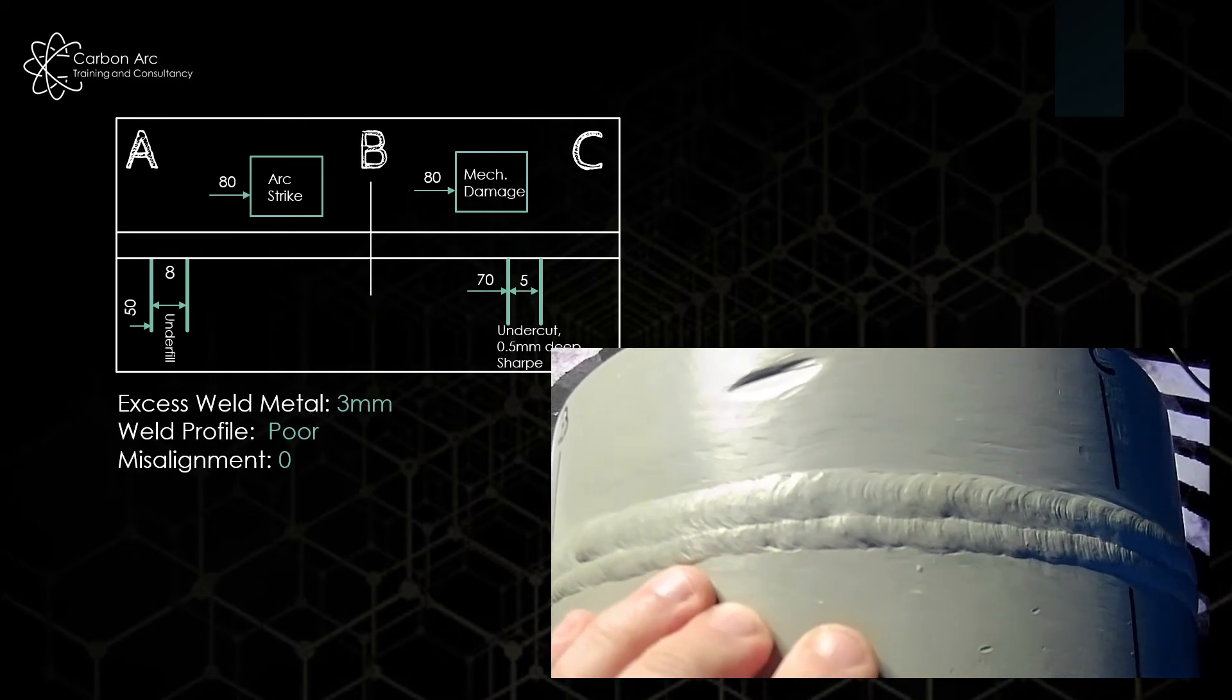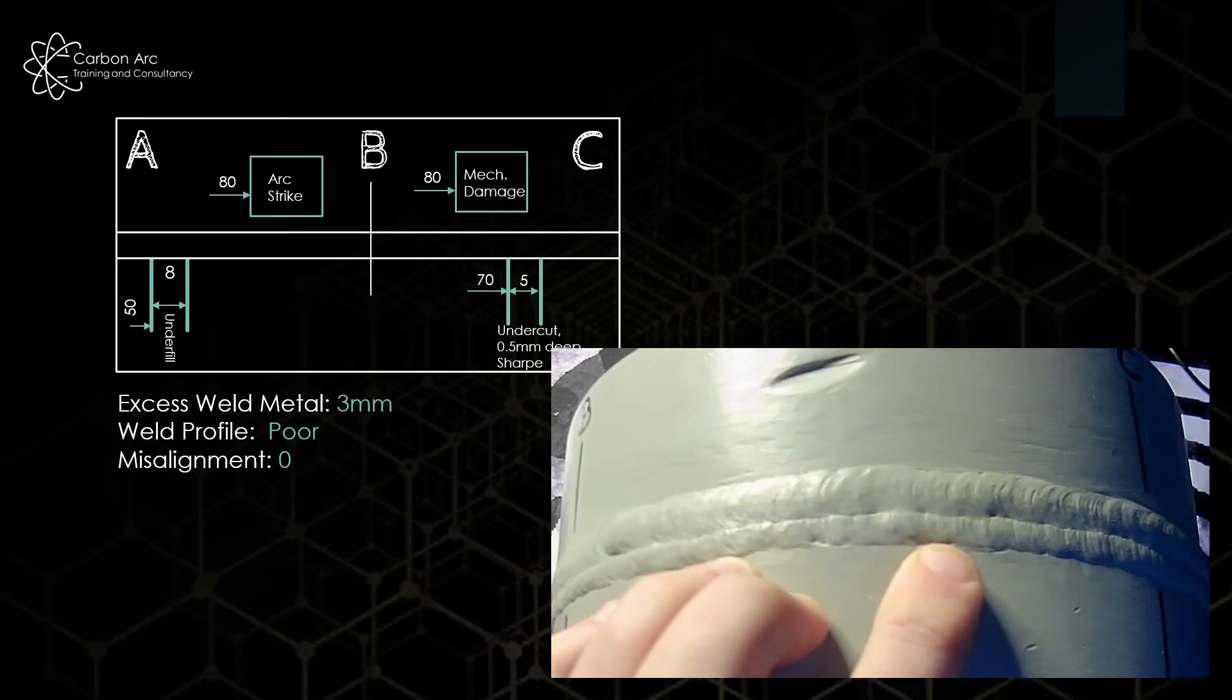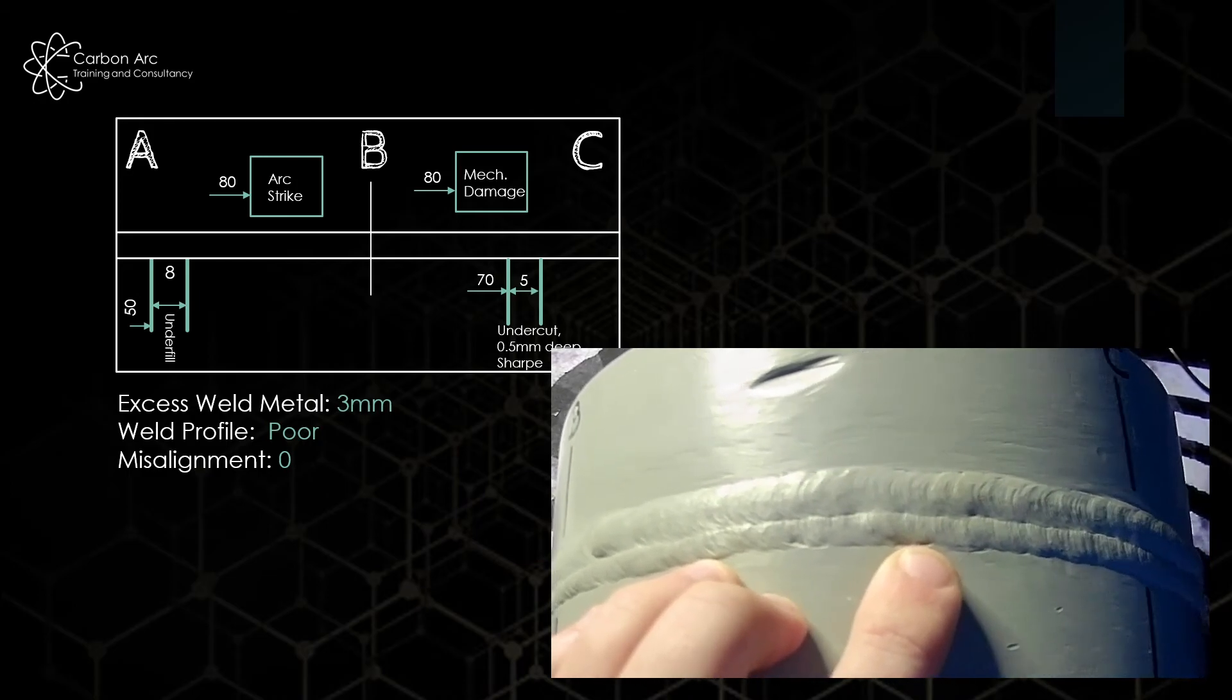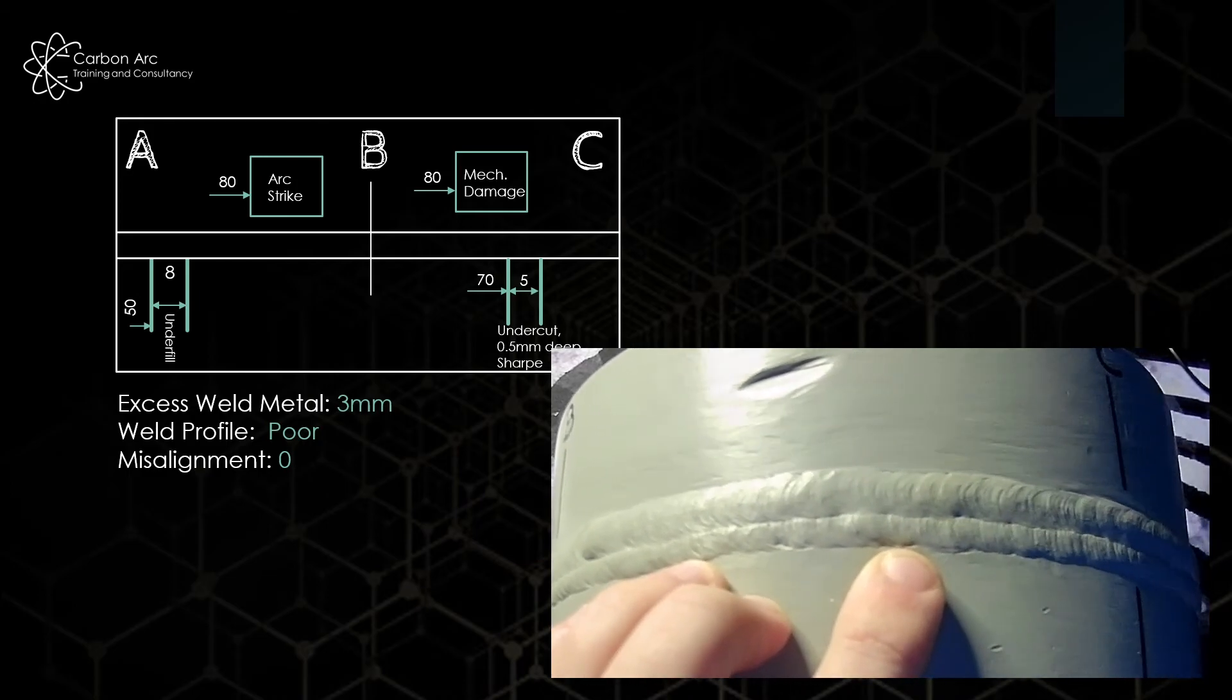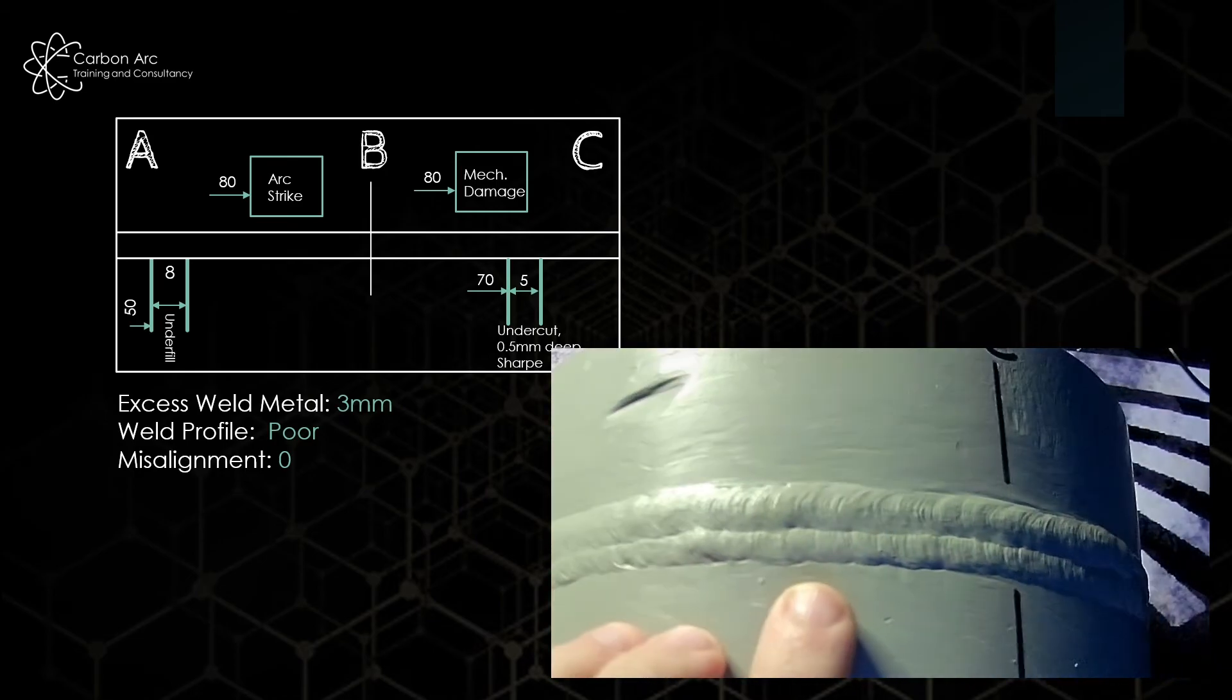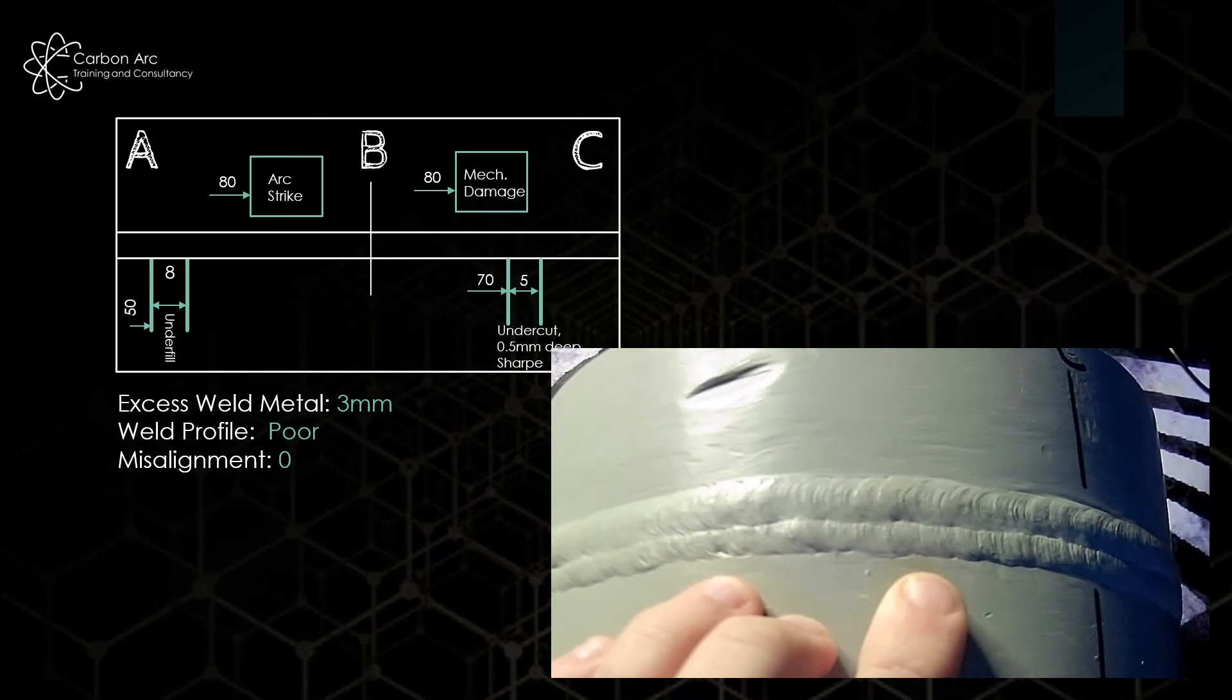If, when you're doing your reports, say you don't record how deep it is, when you come to accept and reject your defect in your multi-choices, if it asks for depth, you can go back and say, oh yeah, I missed depth off, let's find it and write it in, and away we go. That's how that one goes through and out.